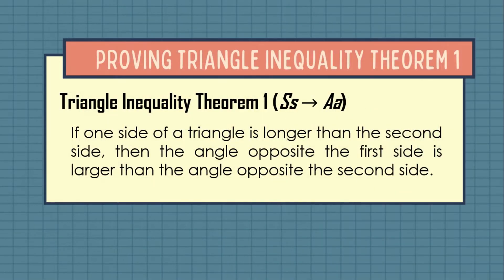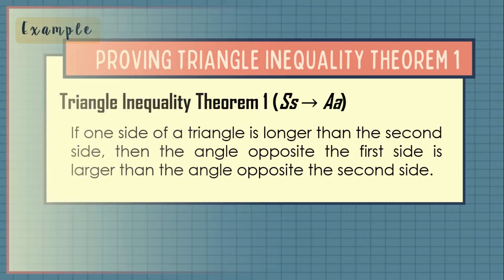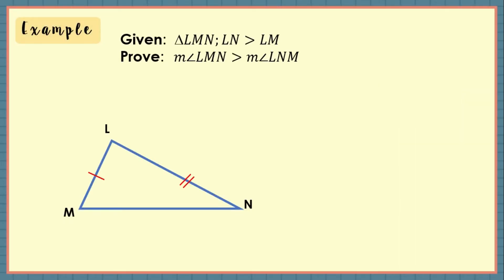Let us start with Proving Triangle Inequality Theorem 1. As you can recall, this theorem states that if one side of a triangle is longer than the second side, then the angle opposite the first side is larger than the angle opposite the second side. Let us have an example. Given triangle LMN, wherein side LN is greater than side LM, let us prove that the measure of angle LMN is greater than the measure of angle LNM.